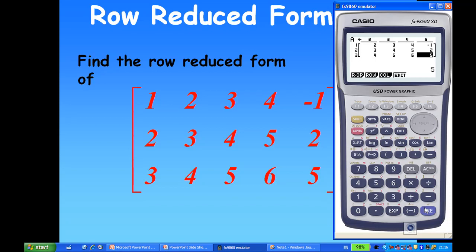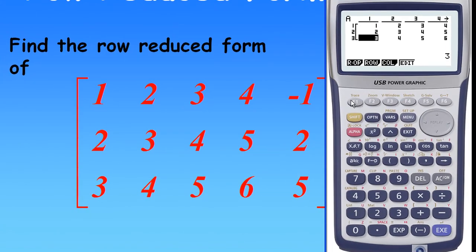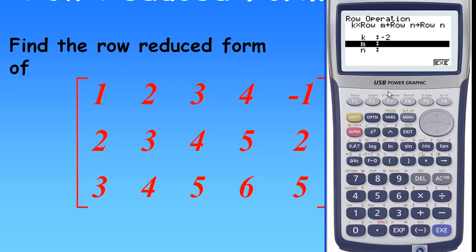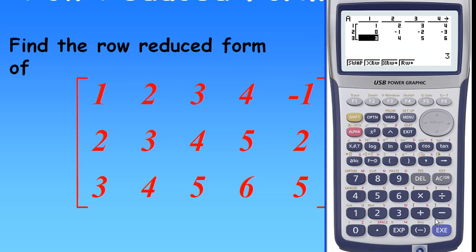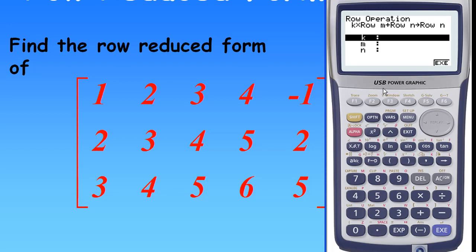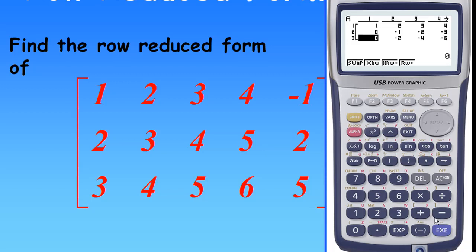After I've finished entering the matrix, I'm going to do some row operations. I press F1 for row operation, but before that I move to the left to go back to the first column. Now I'll do the row operation: F1 for row operation. I press F3, then minus 2 multiplies the first row and adds to the second row — press EXE. Then I do the third row operation with minus 3 times the first row added to the third row — press EXE. So I have a leading 1 in the first row and below it all zeros.